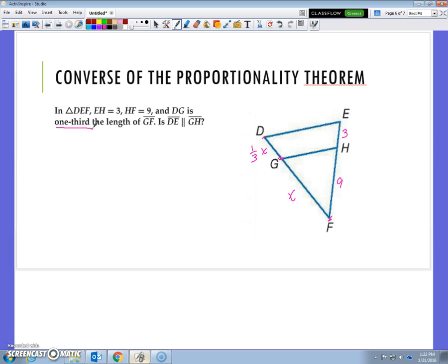Using the converse of the proportionality theorem, we need to determine whether these lines are parallel. Well, they are parallel if and only if the proportion between GF and DG and HF and EH are the same. So, let's take a look here. If I say one third X compared to X and 3 compared to 9, let's see what happens. One third X times 9 or one third of 9 is 3. So, 3X equals 3X when I find the cross product. I would say that that's a true statement, therefore the fractions are equal and I know for sure that yes, DE is parallel to GH. So once again we're just checking to see if this little guy compared to this big guy and this little guy compared to this big guy are proportional, meaning they have the same ratio, and in this case they are. Therefore, the converse to proportionality theorem says that these must be parallel.